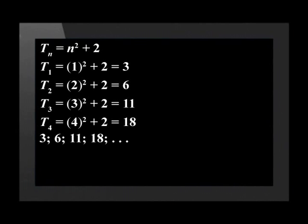Now look at the pattern 3, 6, 11, 18. The difference between term 2 and term 1 is 3, between term 3 and term 2 is 5, and between term 4 and term 3 is 7. There is no constant first difference as with linear number patterns.